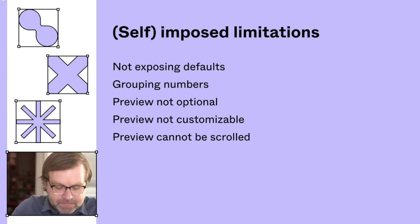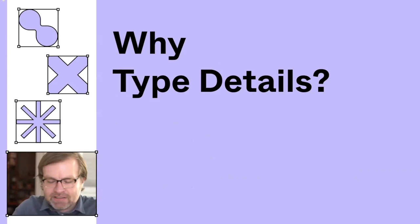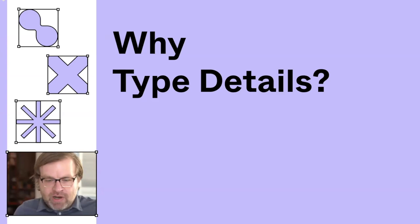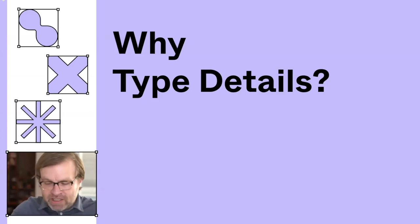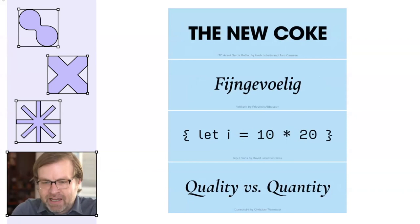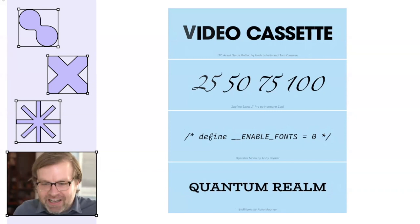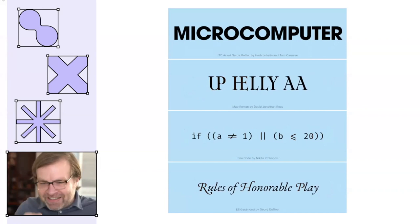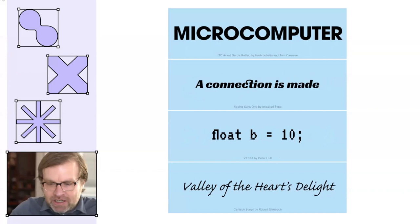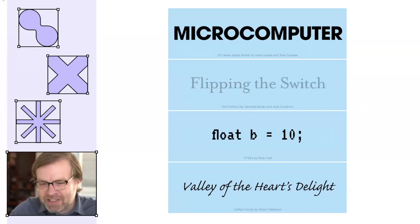Why does it matter? We know this feature won't be used by a lot of people — these are nuances of type. But maybe it will be used by more people than before, because some will discover these features through this better UI. A lot of these font details are so delightful and wonderful — you almost feel like you're discovering something secret that the font designer hid from you. And I hope it's not dumbing things down: if you've been using OpenType since 1995, you can still get to everything quickly without even looking at the preview. Hopefully we found the right balance.